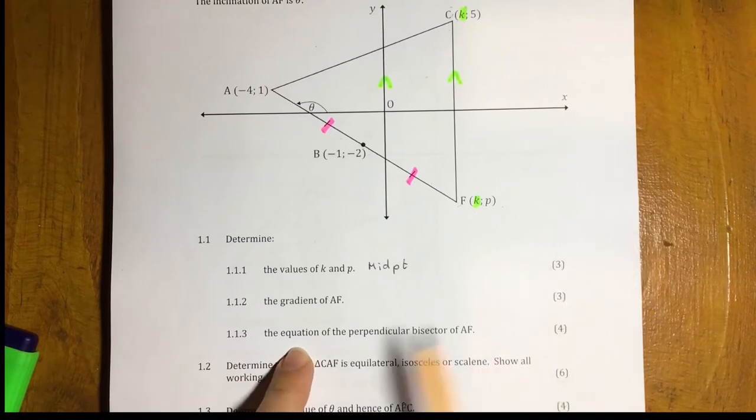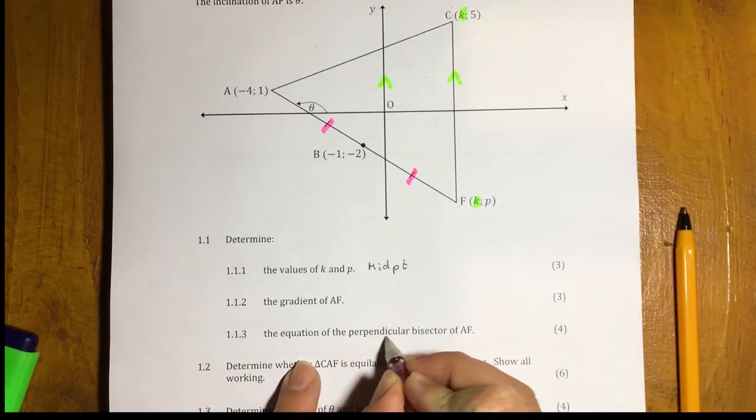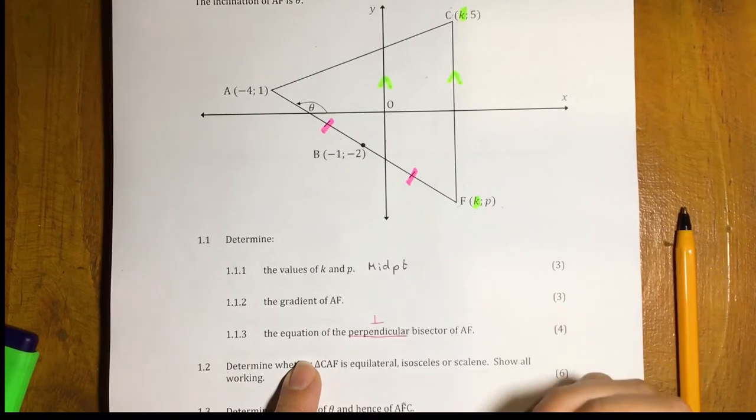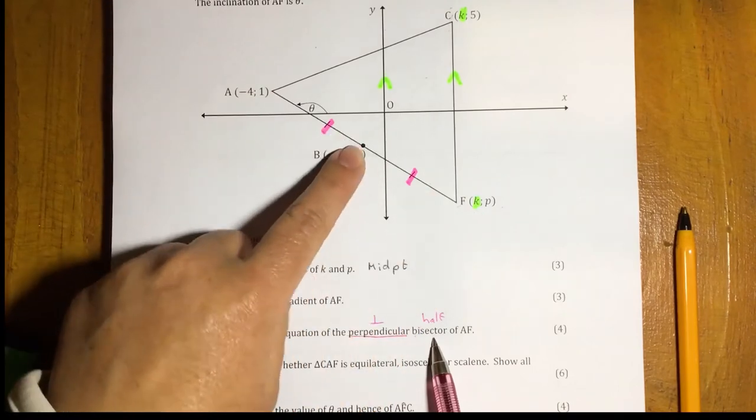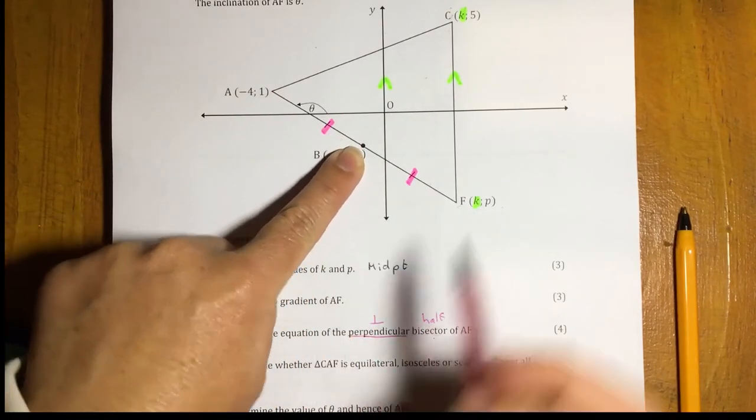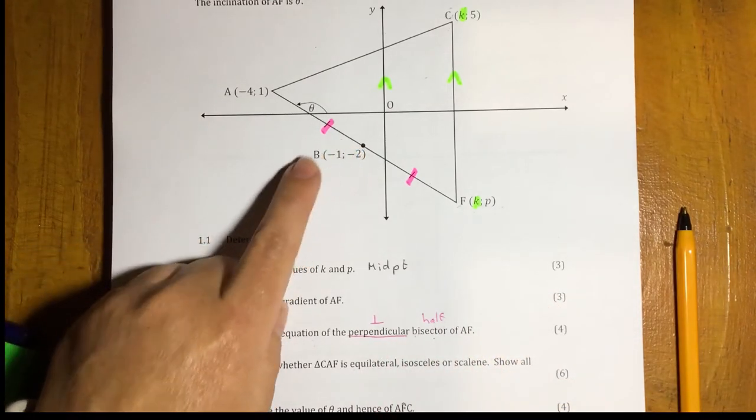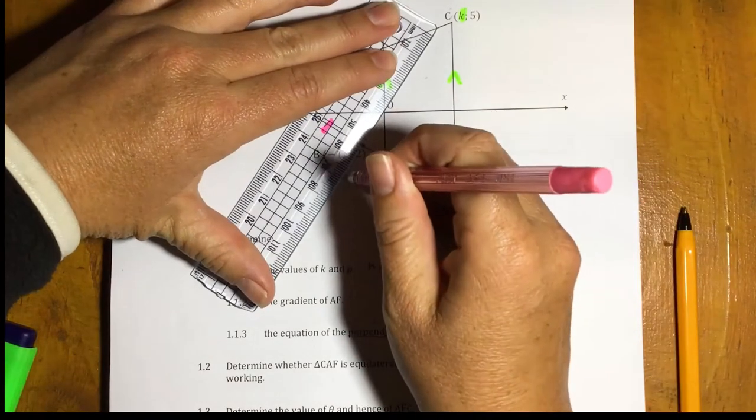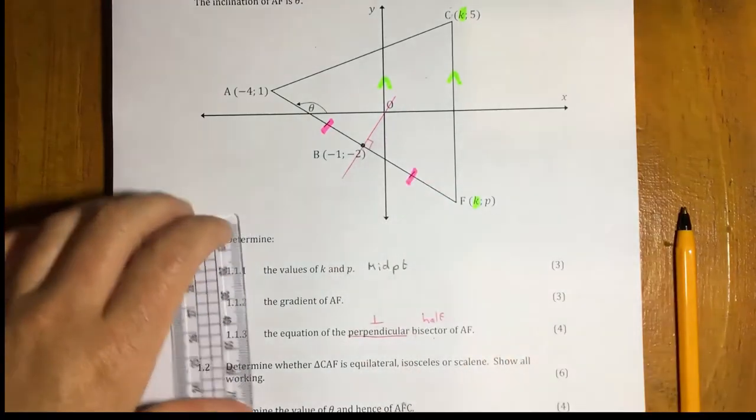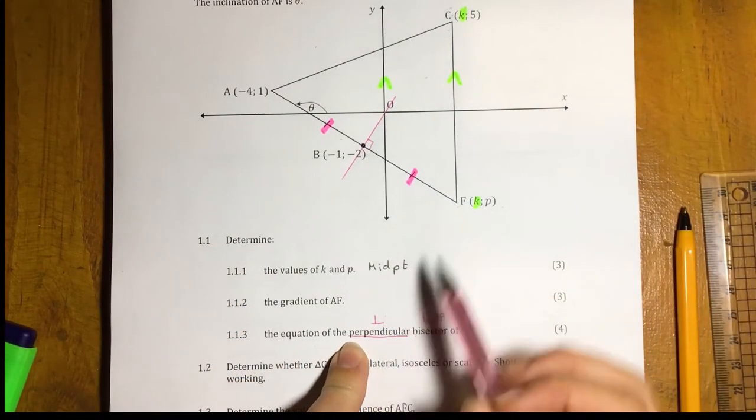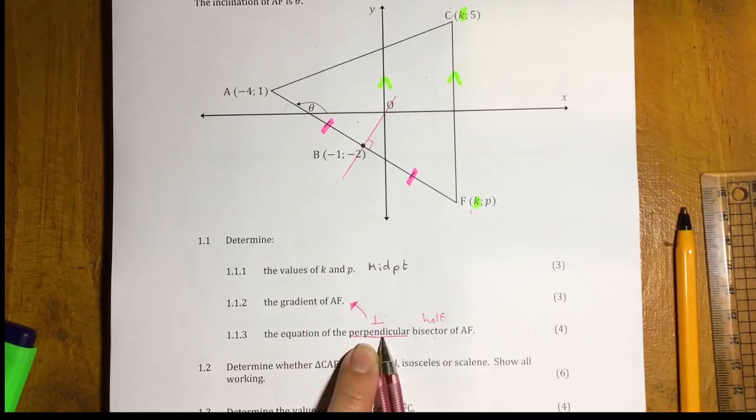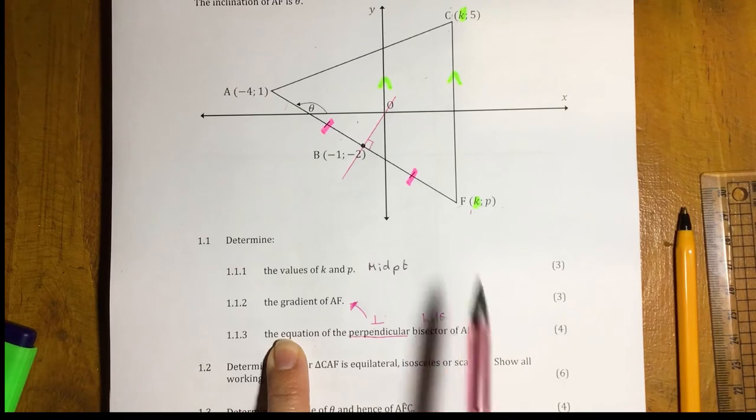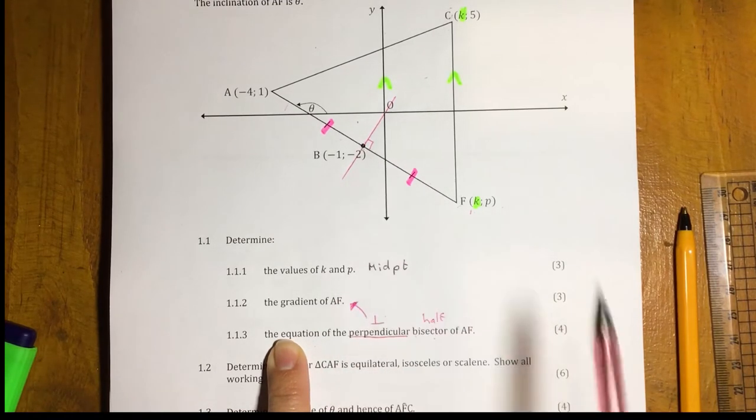Then, 1.1.3, the equation of the perpendicular bisector of AF. So, let's bisect these words. Perpendicular, we know, means 90 degrees. Bisector means cut in half. So, we already know where halfway of A and F is. So, we've got a point for our line, first of all. And then, we know that that line is going to be at 90 degrees. So, if you really need to visualize it, you can draw in a line that kind of looks 90 degrees there. Now, hopefully, you're already thinking, right, it's 90 degrees to AF. We calculated AF over here. So, we can use that gradient to work out our gradient of this line. And our bisector is our point B. So, we've got a point on our line, and we can use that to work out the equation of the line.